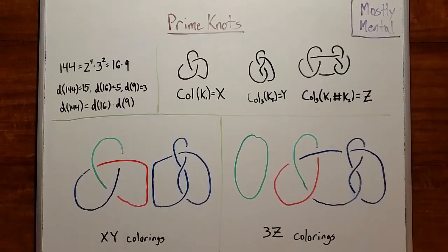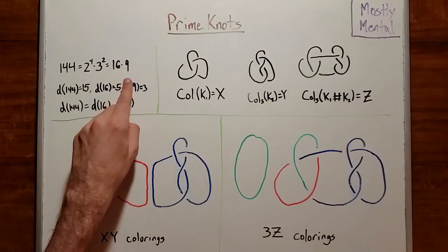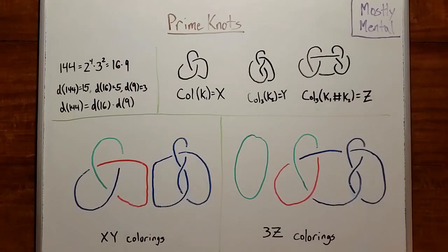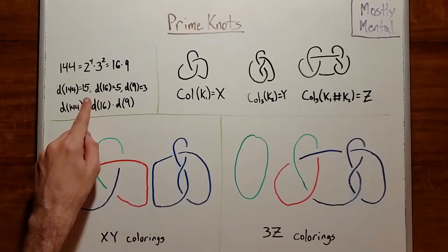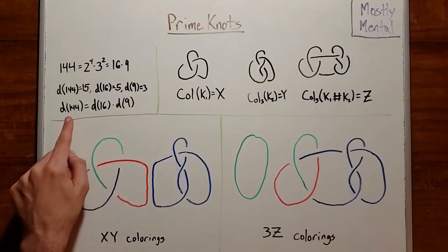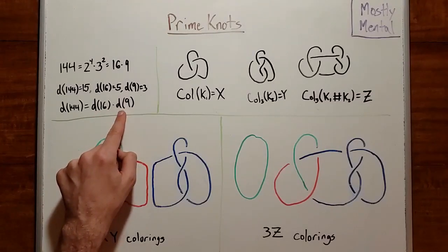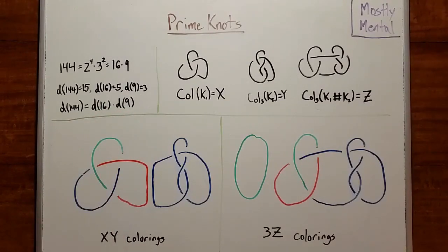Why do we care so much about primes anyway? With prime numbers, we care because a lot of interesting arithmetic properties play nicely with primes and multiplication. For instance, 144 is 2 to the 4th times 3 squared, which is 16 times 9. And if we count the divisors, 144 has 15 of them, 16 has 5, and 9 has 3. So the number of divisors of 144 is the product of the divisors of 16 and the divisors of 9. Similarly, it turns out most of the interesting knot invariants play nicely with prime knots and connected sums.